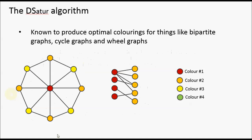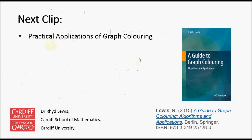The DSatur algorithm can also be shown to be optimal for certain types of topologies. For example, it will colour a wheel graph optimally, and similarly it will colour a bipartite graph optimally. Further details on the DSatur algorithm, the greedy algorithm, and other algorithms, together with their proofs, can be found in this book: A Guide to Graph Colouring Algorithms and Applications.